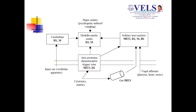The higher centers are present in the medulla oblongata. The receptors there include D2 and muscarinic receptors. The solitary tract nucleus has H1, H3, dopamine, muscarinic, and histamine receptors. In the chemoreceptor trigger zone, an area of the brain has 5-HT3 and D2 receptors. In the cerebellum, there are H1 and muscarinic receptors.